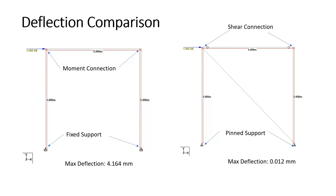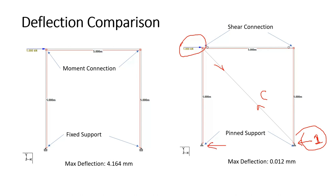How does this frame with vertical bracing transfer lateral load? When the lateral load acts, the bracing will be under compression, and this lateral load is directly transferred to the support in the form of shear. If you have 1 kN acting at the top joint, the shear at the braced support will be directly 1 kN, and you will find no lateral reaction at the other support — it will be 0.